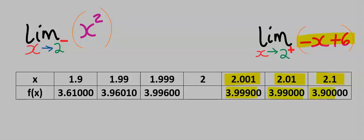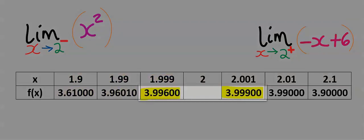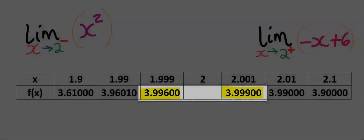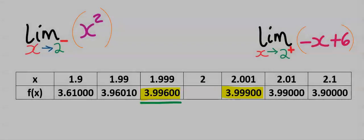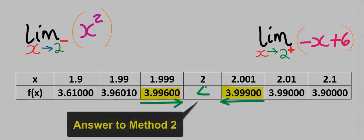Next, substitute all the values on the right-hand side and you're going to get an f(x). Next, substitute each of these values for the left-hand limit and you're going to generate each of these f(x). You can see from the table: as you approach 2 from the left, you're tending towards 4. Likewise, as you approach 2 from the right, you're tending towards 4. That's why we concluded that the limit is 4, which exists.